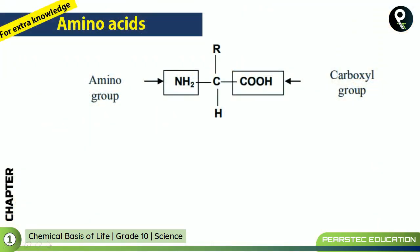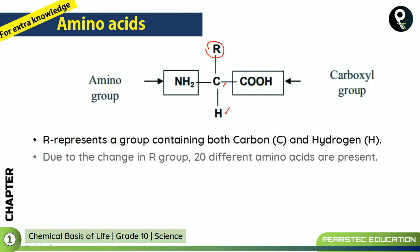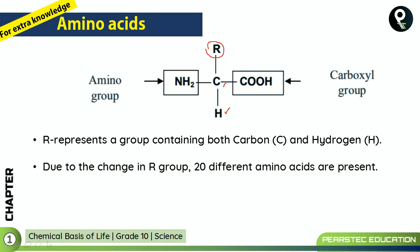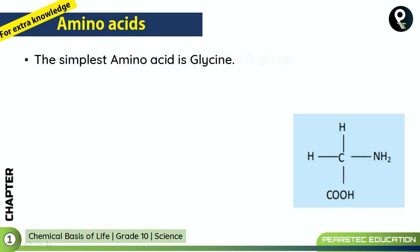Now there is something extra you must learn about amino acids. The R group represents a group containing both carbon and hydrogen. Due to the change in the R group, 20 different amino acids are present. All proteins in organisms, from bacteria to humans, are made up of these 20 different amino acids combined in different sequences.